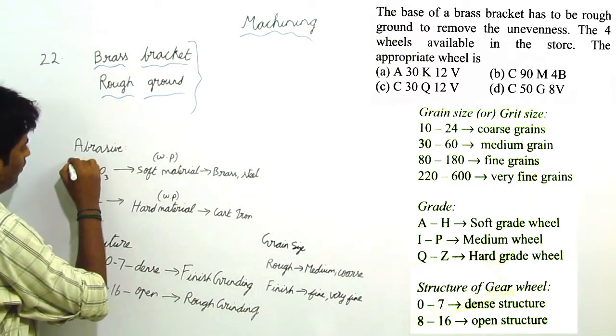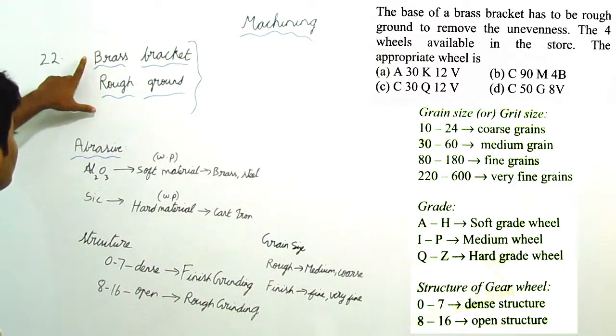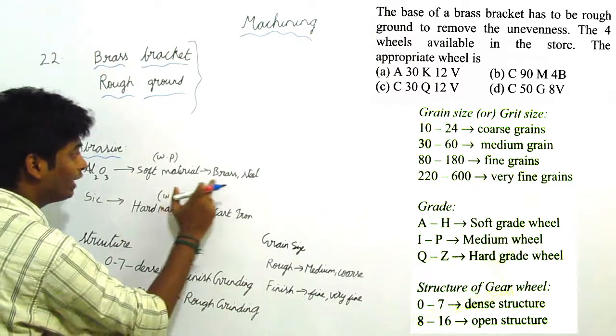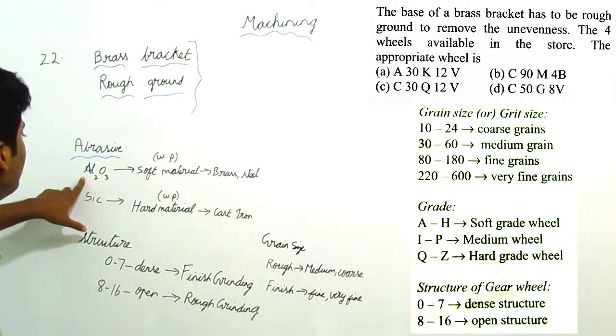First, we will take abrasive. They have given brass bracket, the work piece is brass. It is soft material. We have to use Al2O3, that is Aluminum Oxide.